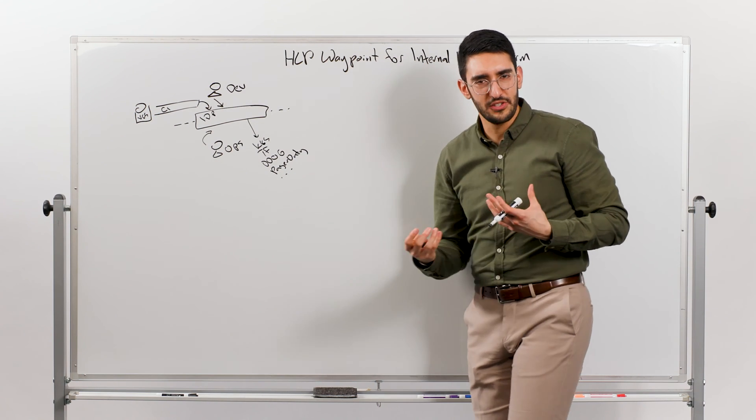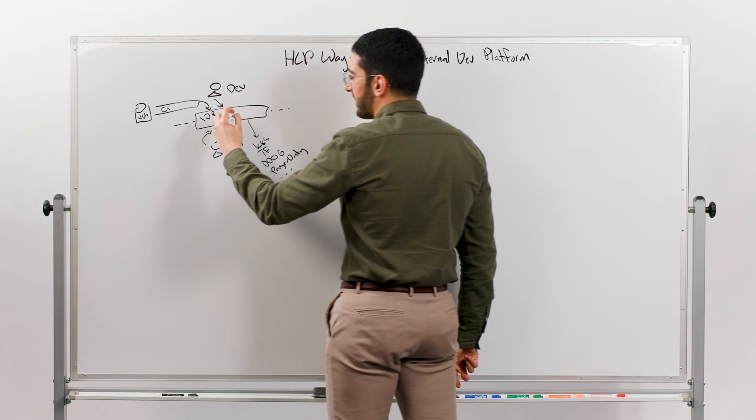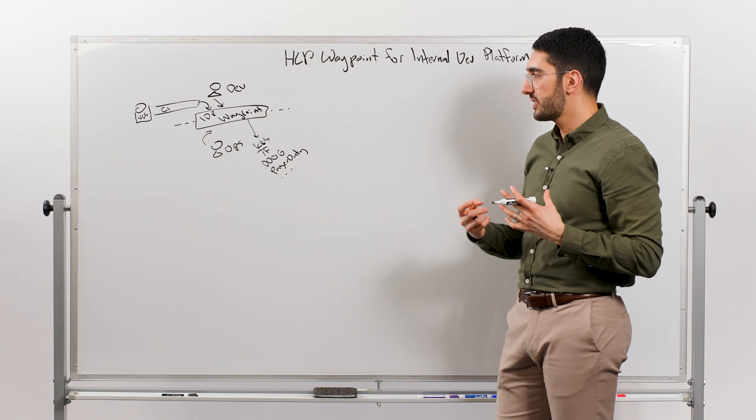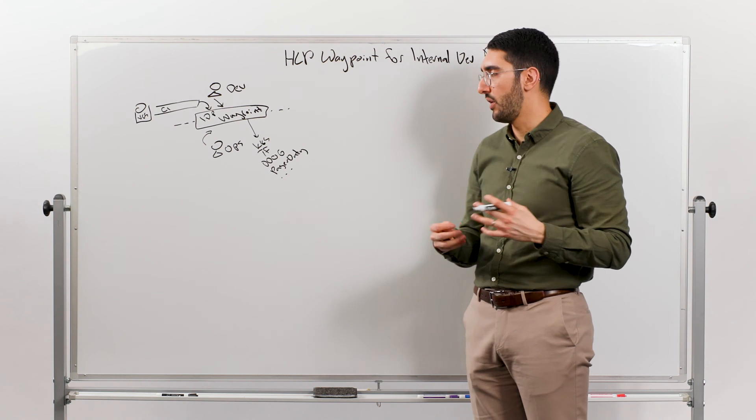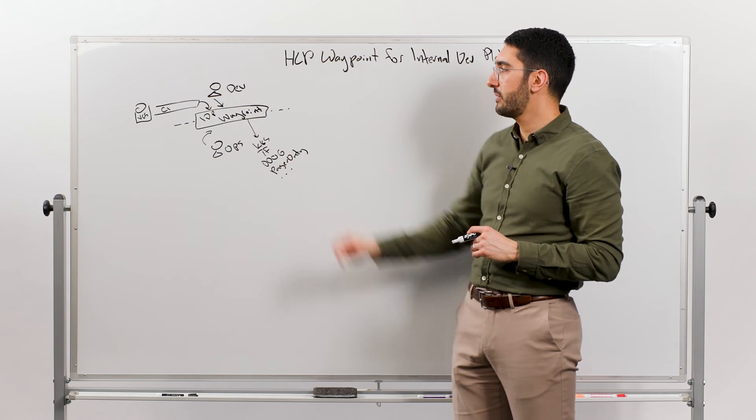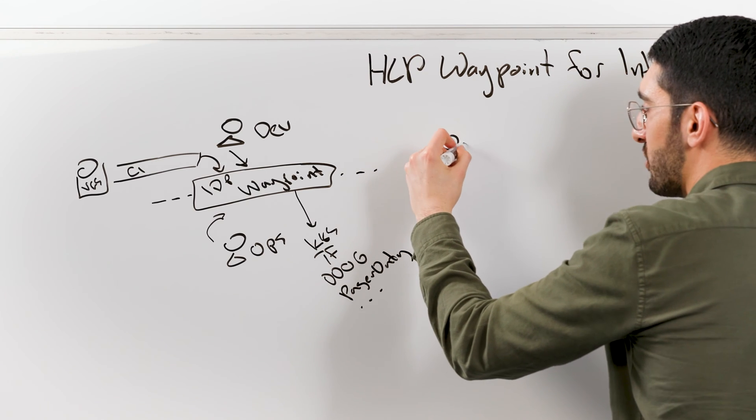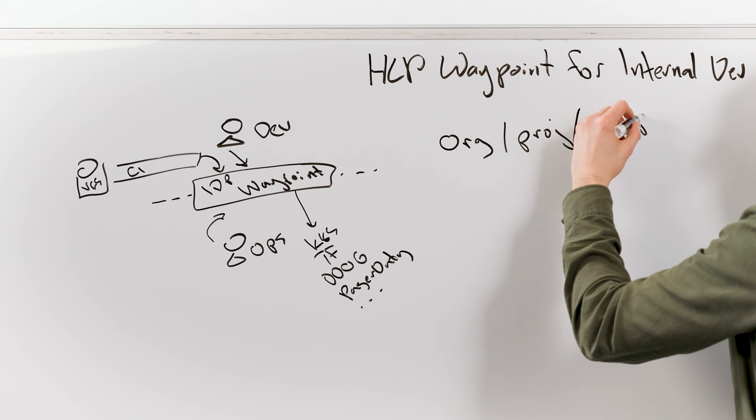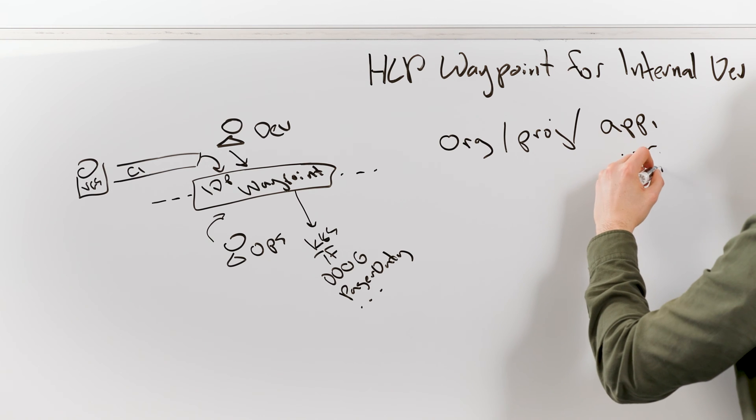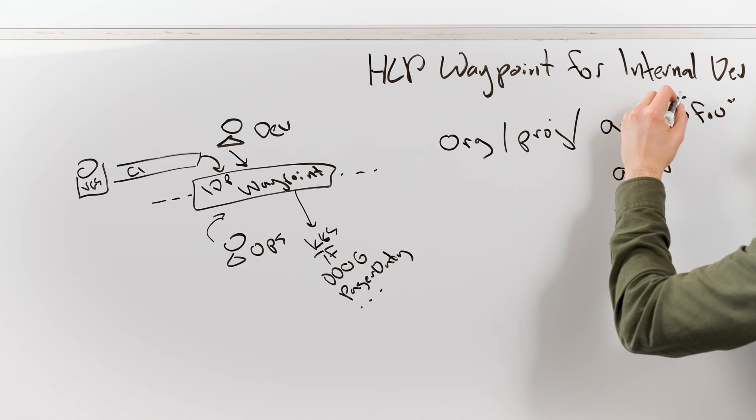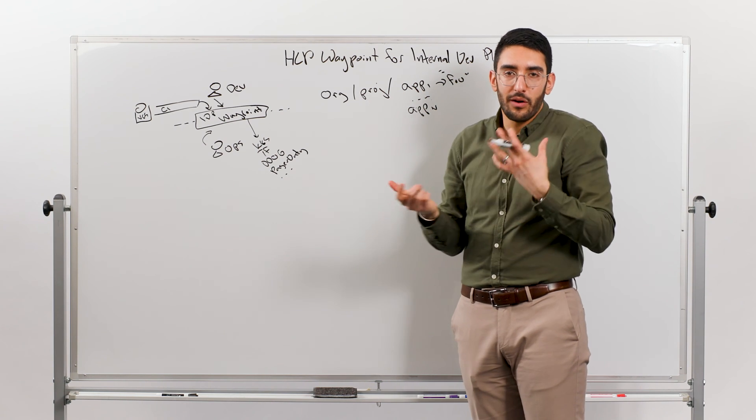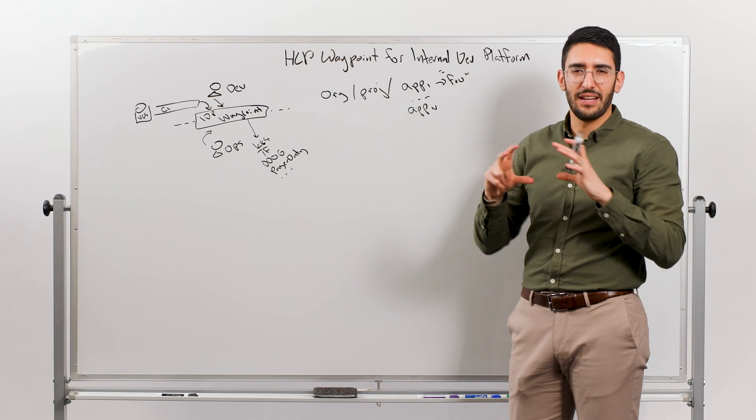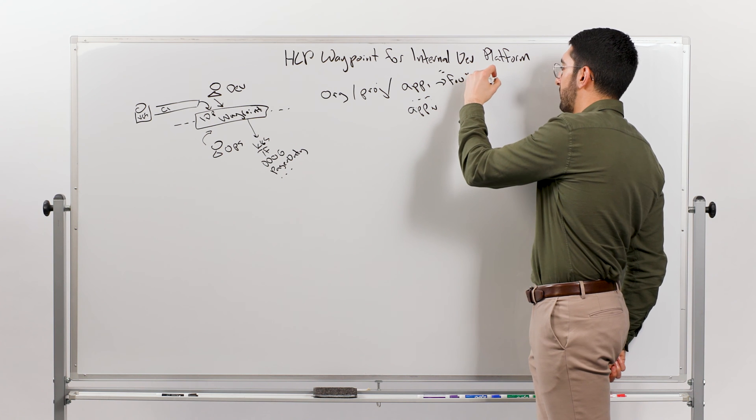At a high level, the way I would think about an internal developer platform is about the interface between developers and operators. It's about an abstraction layer that hides the infrastructure and allows developers to focus on their business logic. There's a few key important concepts that we talk about. The first is this notion of do I have a service catalog or an application catalog of what are all my different applications that are running.